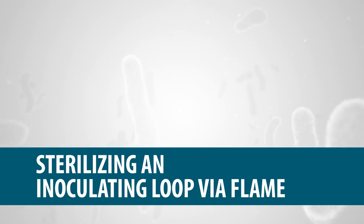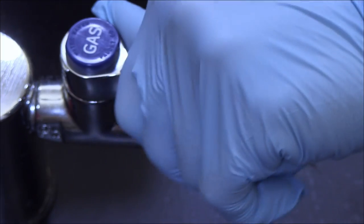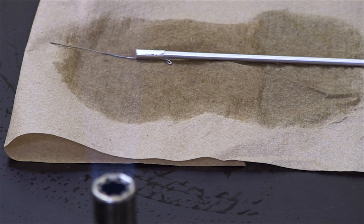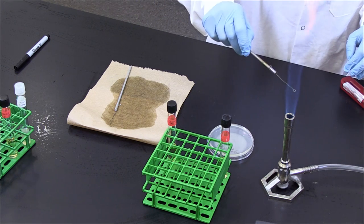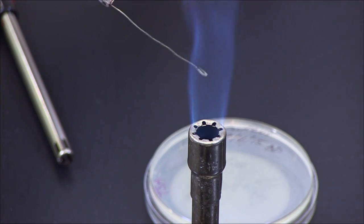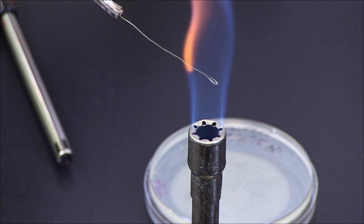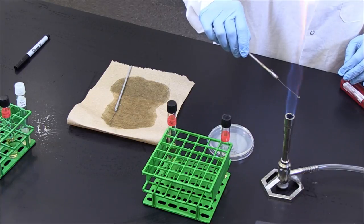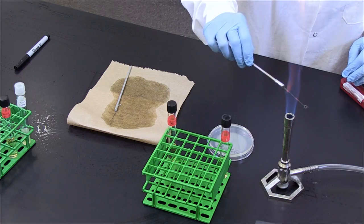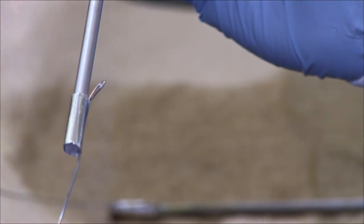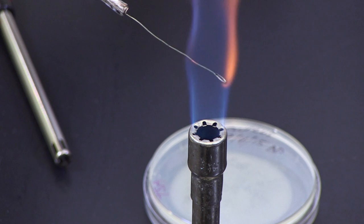Sterilizing an Inoculating Loop via Flame. Pass your inoculating tools through the hottest part of the flame, which looks like a blue cone from a Bunsen burner, to sterilize them. Once sterilized, the inoculating tools should not be touched or set down on any surface. Always work close to the flame, as it generates hot air that reduces airborne contaminants.